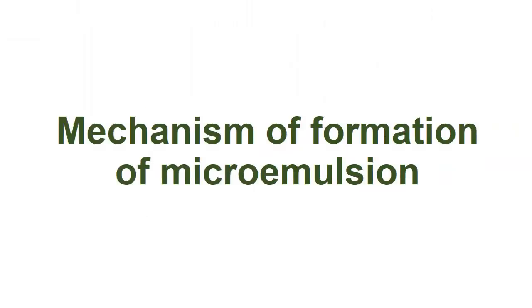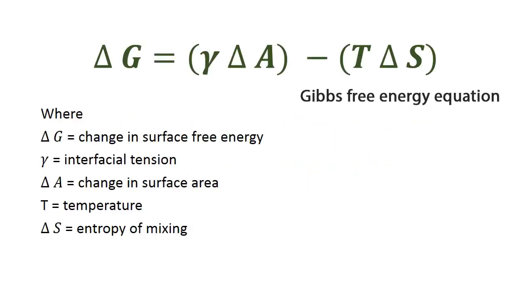The equation of Gibbs free energy is as follows: Delta G is equal to lambda multiplied by Delta A, minus T multiplied by Delta S. Where Delta G is the change in surface free energy, lambda is the interfacial tension, and Delta A is the change in surface area.